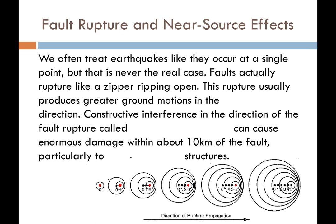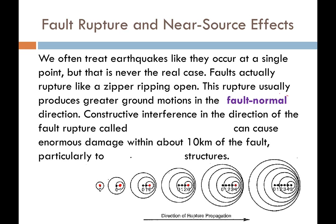This figure represents that propagation. At time zero we have our initial rupture, with energy emanating outward. As subsequent asperities break in the direction of rupture, energy from each new rupture stacks on top of prior energy. Notice how in the direction of fault rupture, all those circles representing spreading energy start piling up — that is constructive interference of waves producing a huge amount of energy.